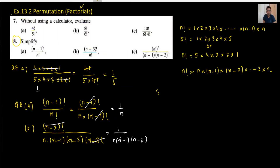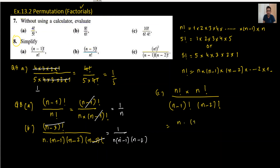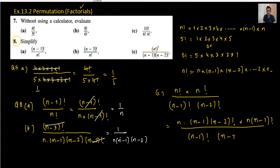Moving to Part C: we have n factorial squared divided by n minus 1 factorial times n minus 2 factorial. We can write n factorial as n times n minus 1 times n minus 2 factorial, and similarly in the denominator we have n minus 1 factorial times n minus 2 factorial. The n minus 2 factorial cancels with n minus 2 factorial, and n minus 1 factorial cancels, so we are left with n times n minus 1, which gives n squared minus n. The answer is right and we've done it.